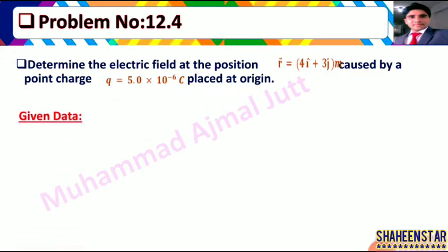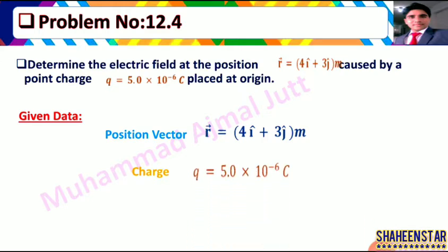Ab student, agar position given hai to electric field kya hogi — us ko hum ne dekhna hai. Given data mein hamare paas hai: position vector r = 4i + 3j meter, aur charge ki value q = 5.0 × 10⁻⁶ coulomb. To hum ne jo find karna hai woh electric field hai.